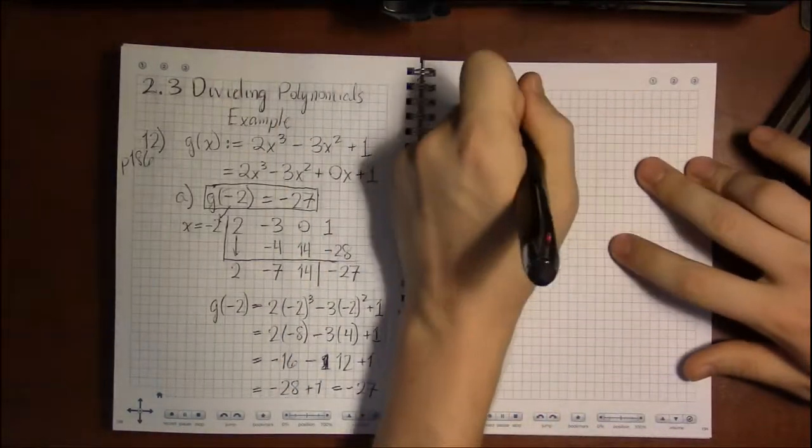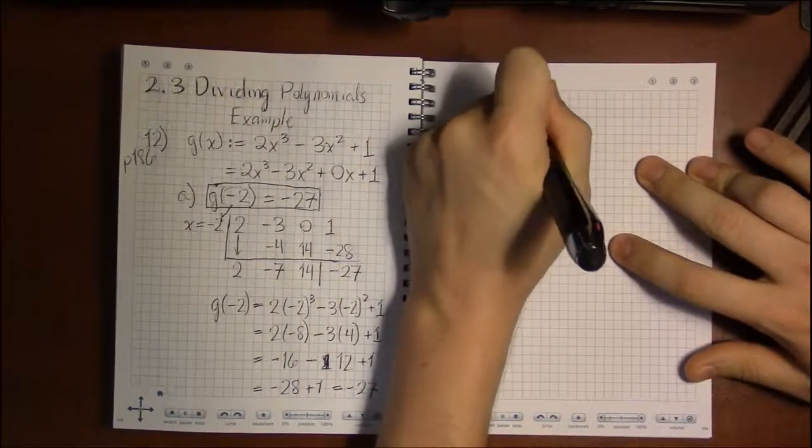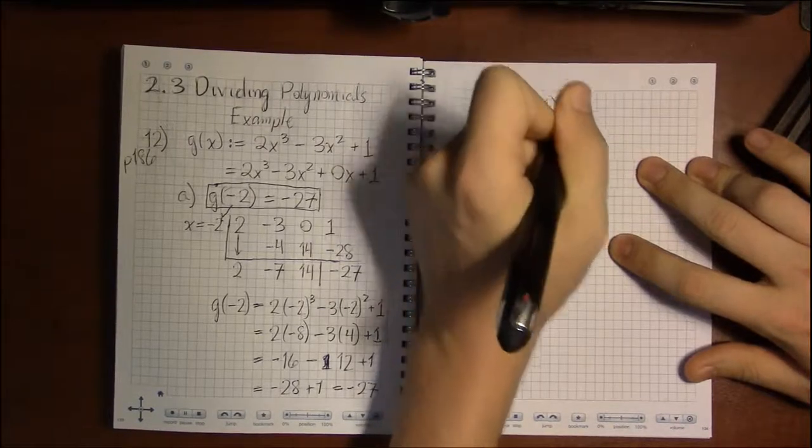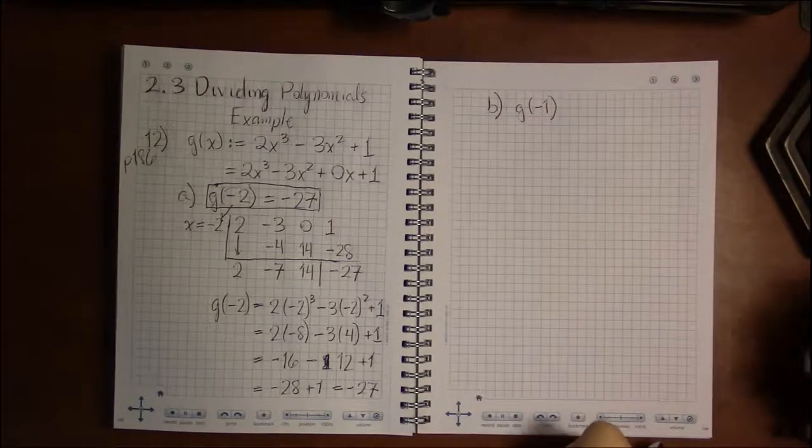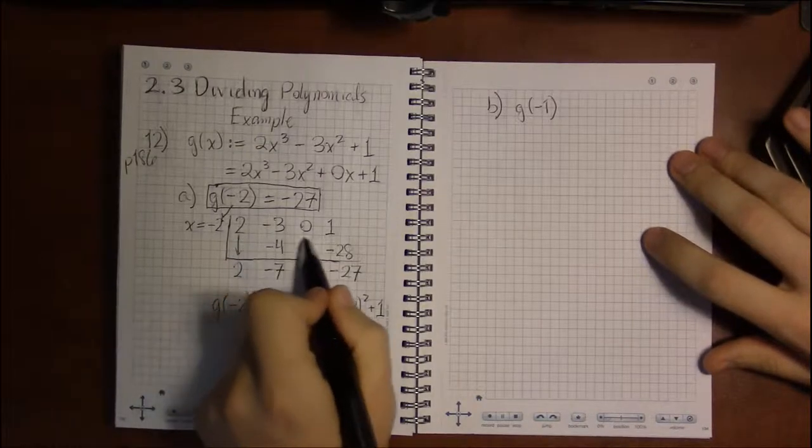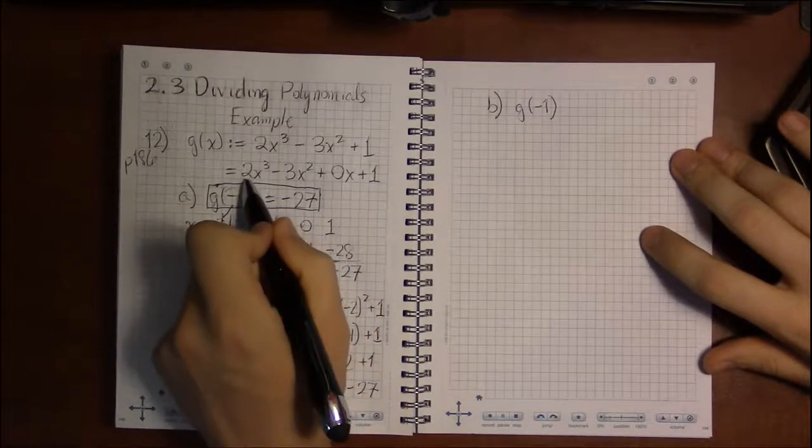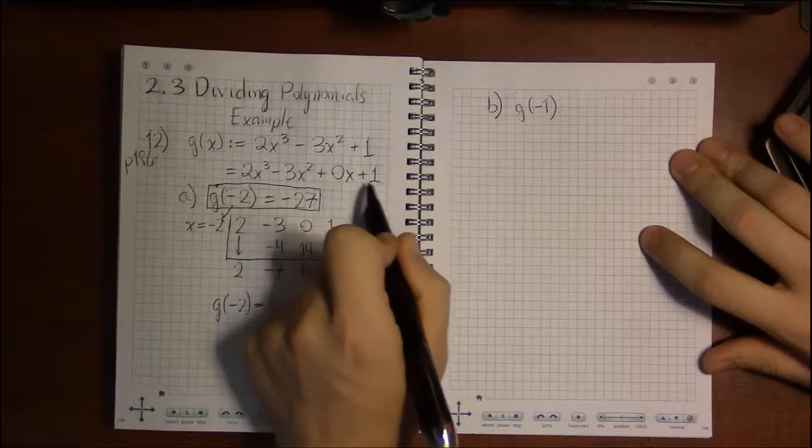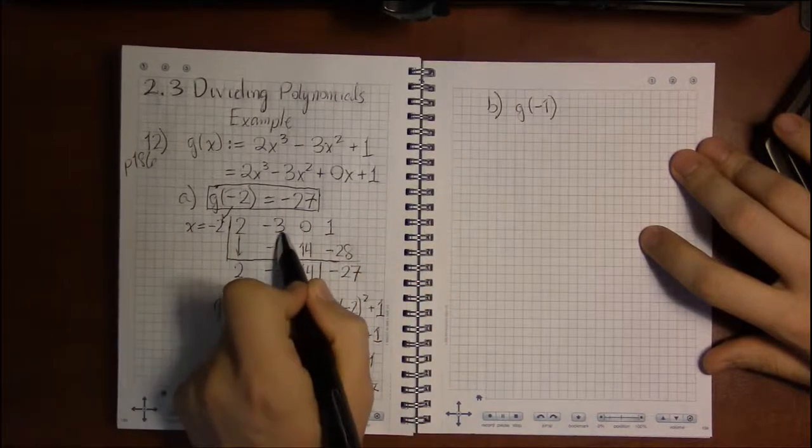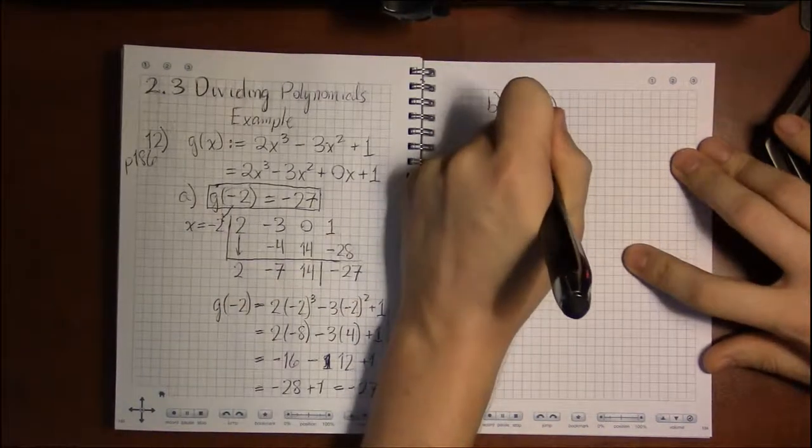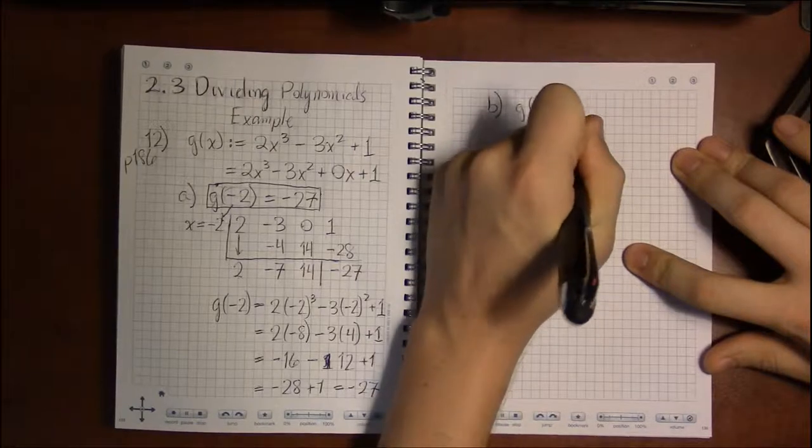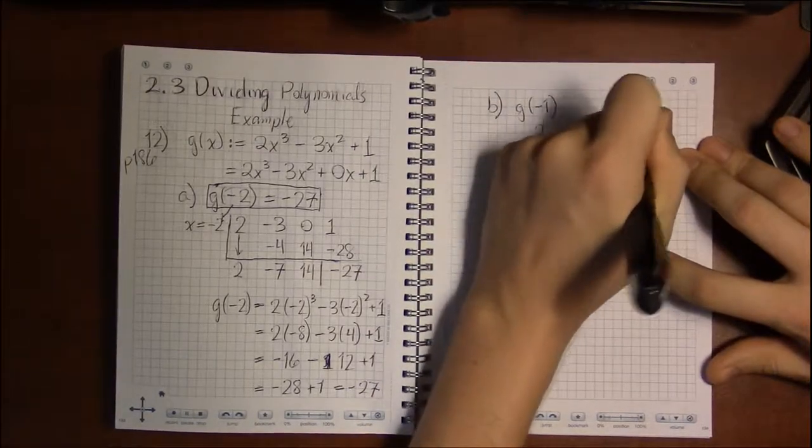Part B asks us to evaluate g of minus 1. So we've set up the exact same synthetic division. g remains the same. So these numbers inside the fencing, the 2, the minus 3, 0, and the 1, all remain the same.